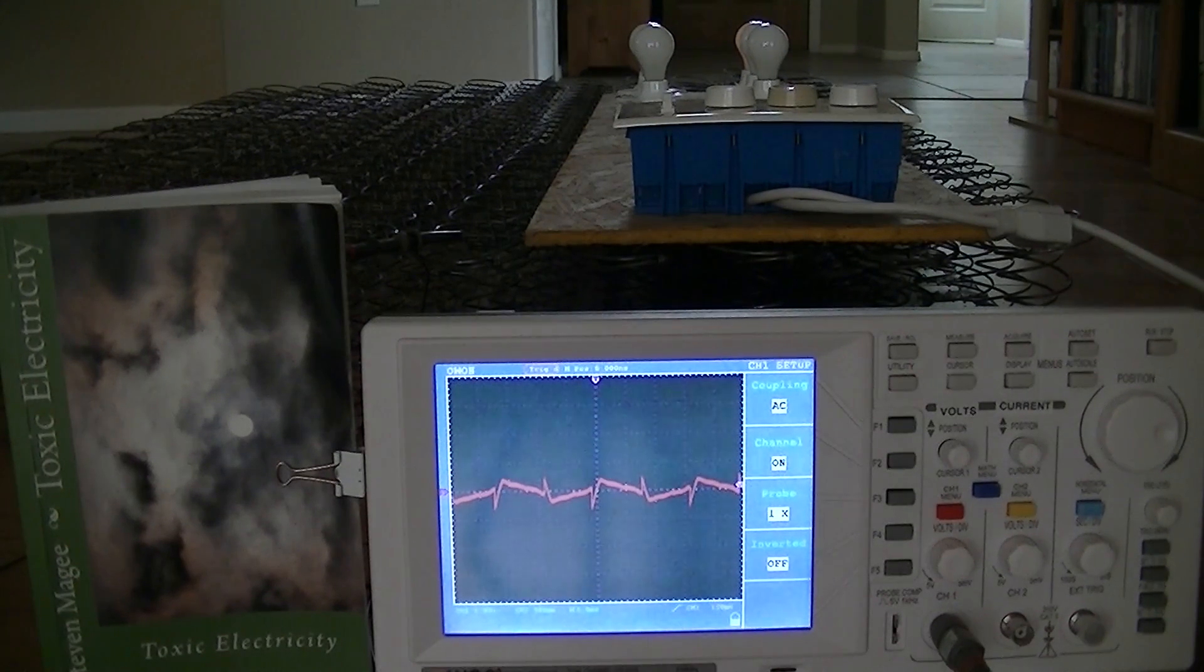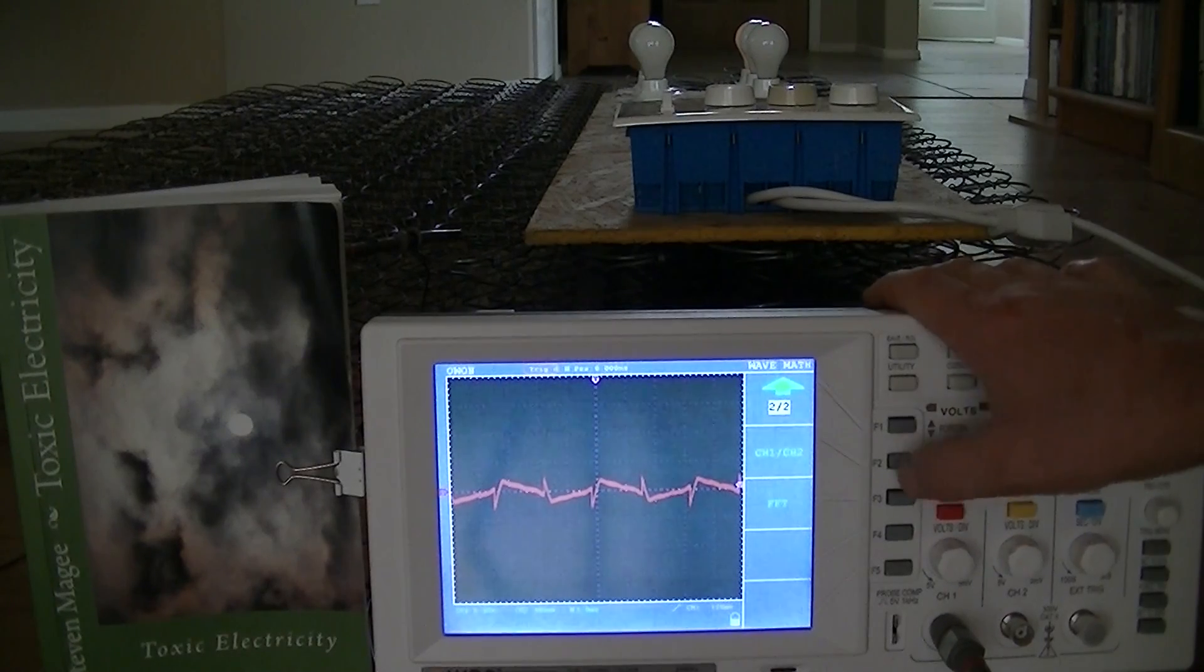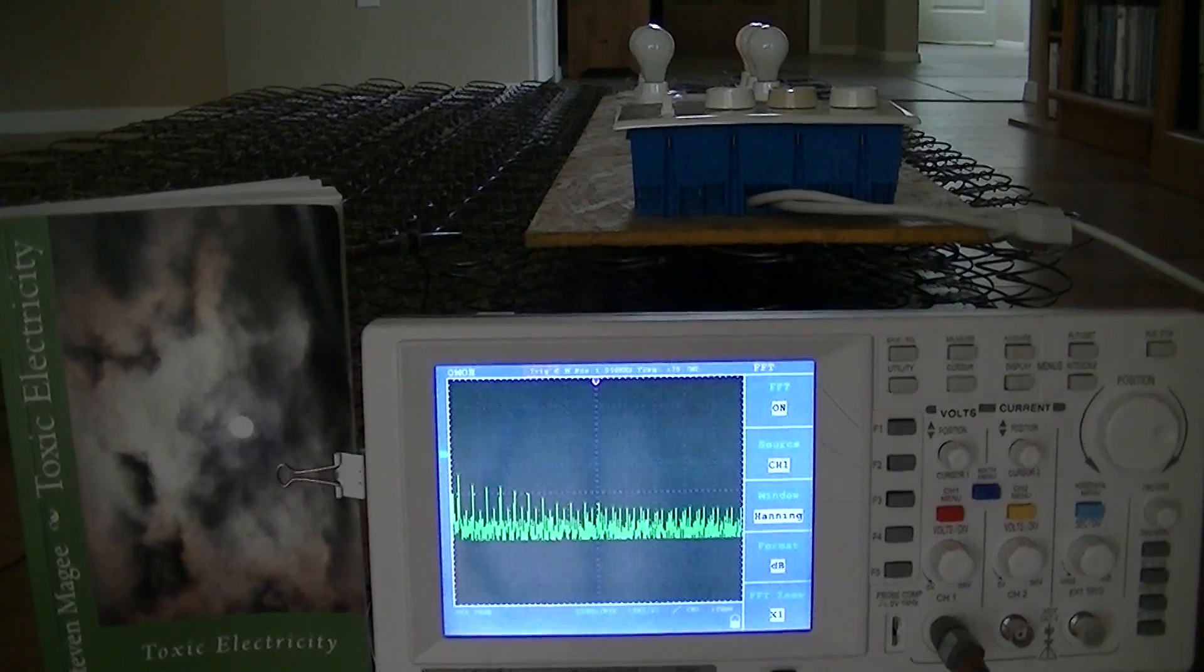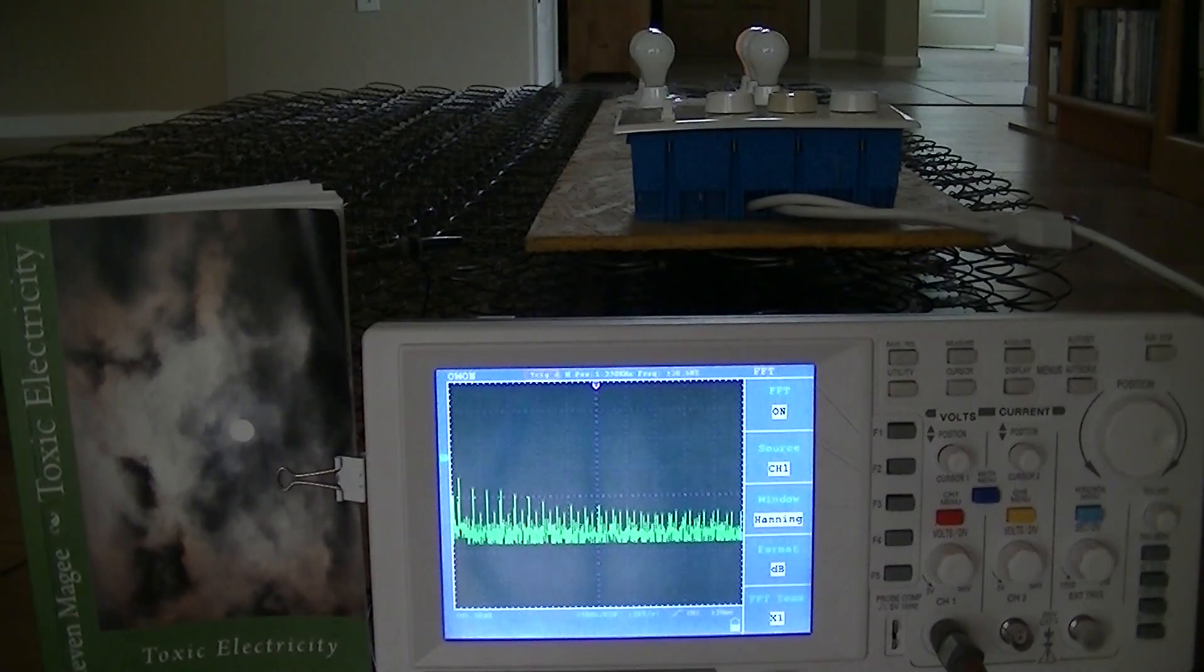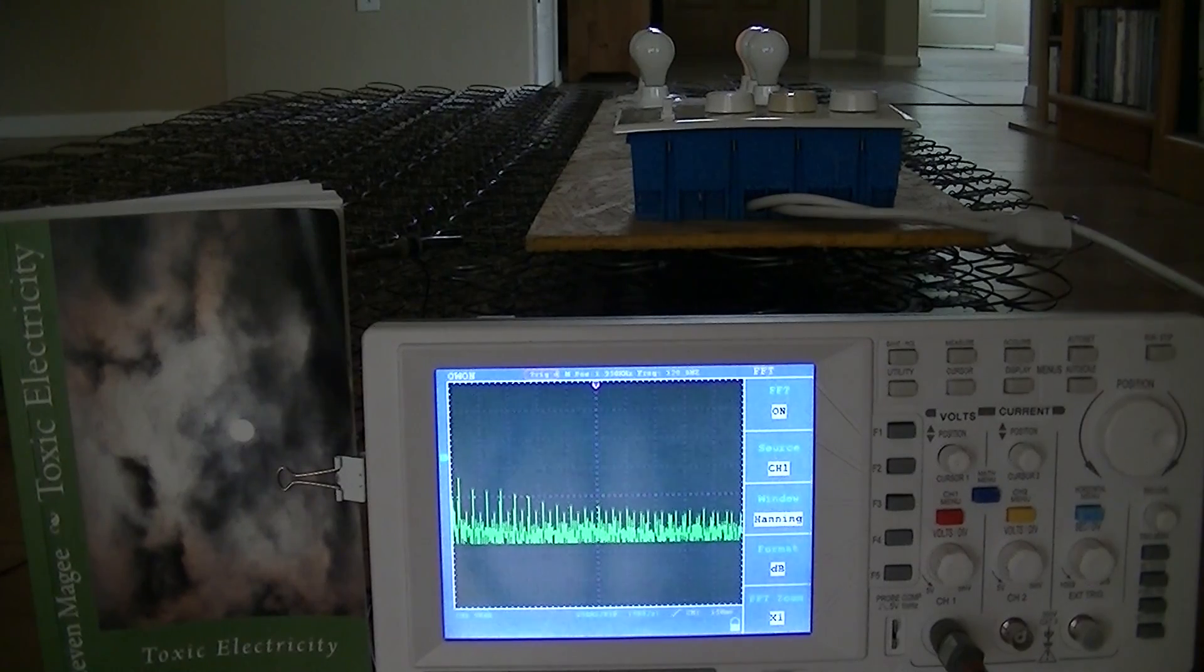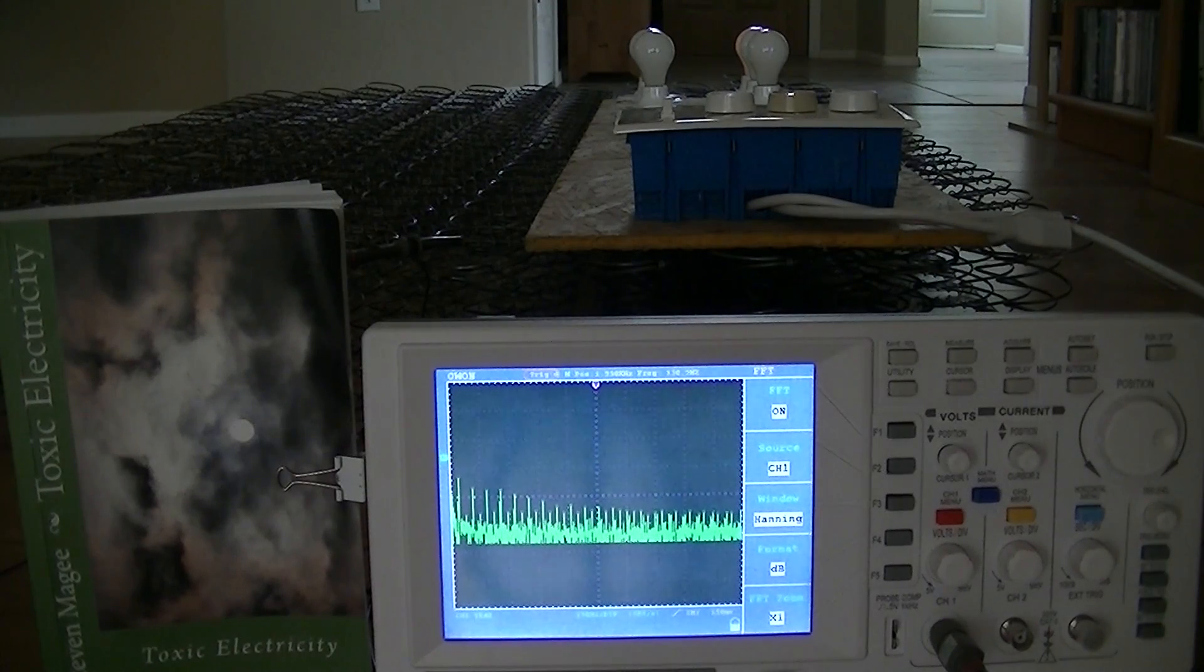I'm going to switch over to a function which is known as the fast Fourier transform function and we can see what's known as the harmonics. On the scale we actually have a 20 decibel scale in the vertical direction and we have a 250 Hertz per division scale in the horizontal direction.